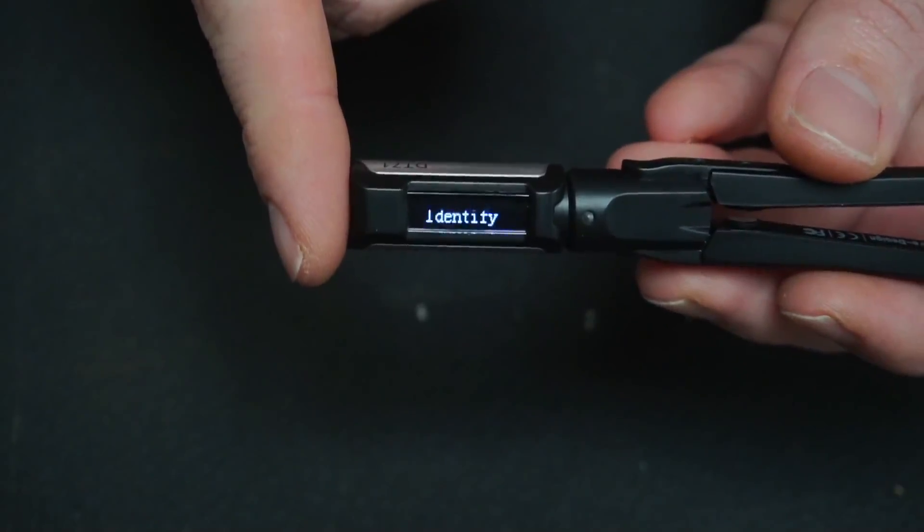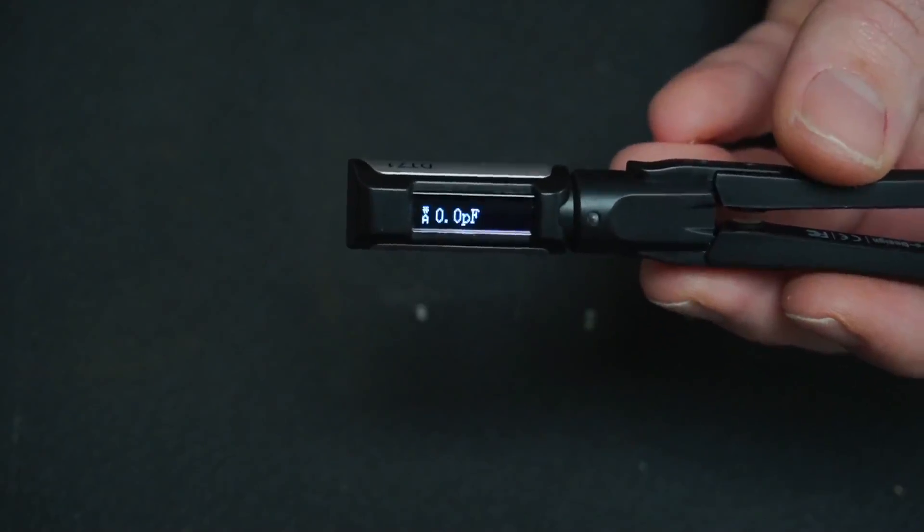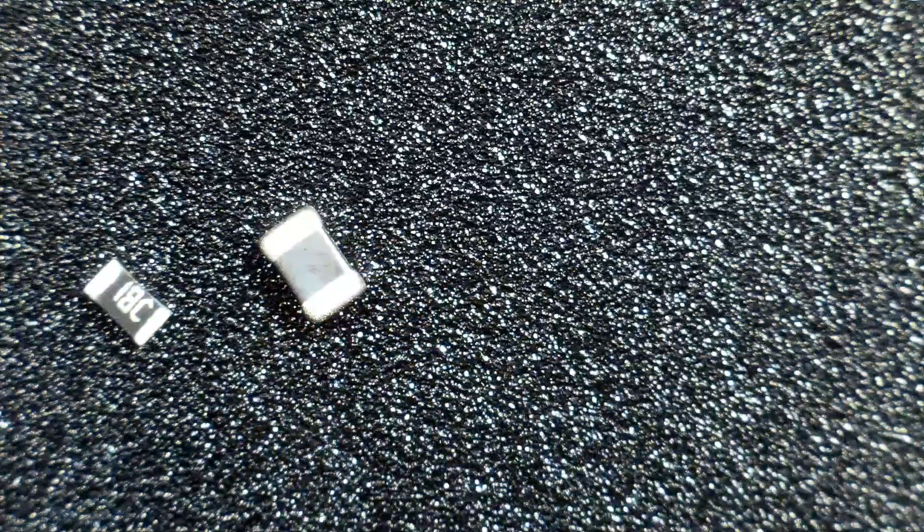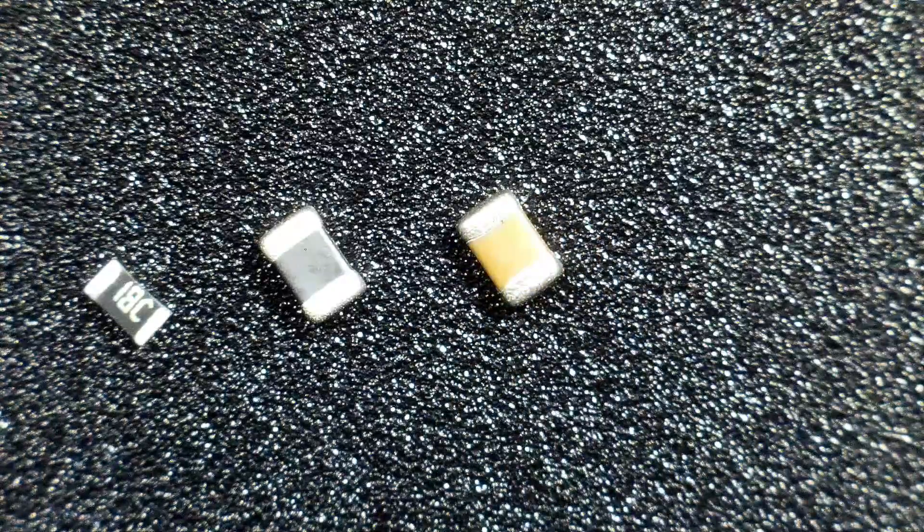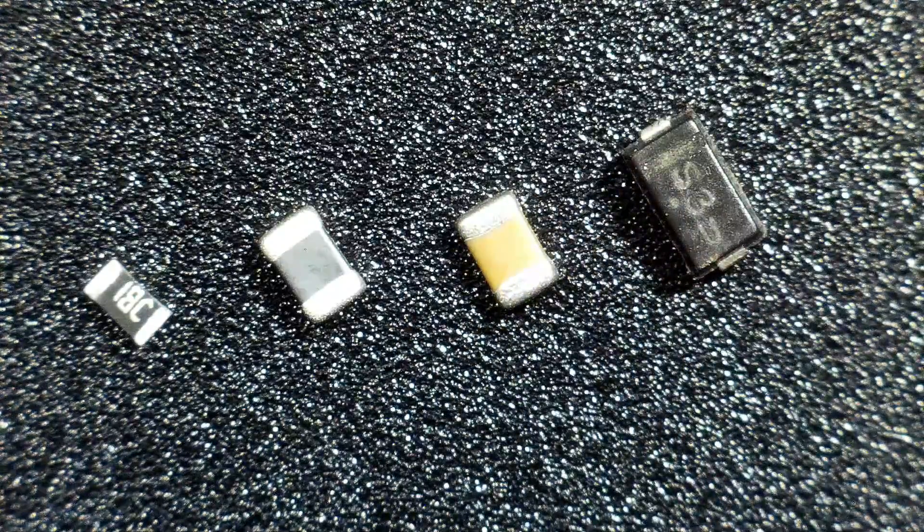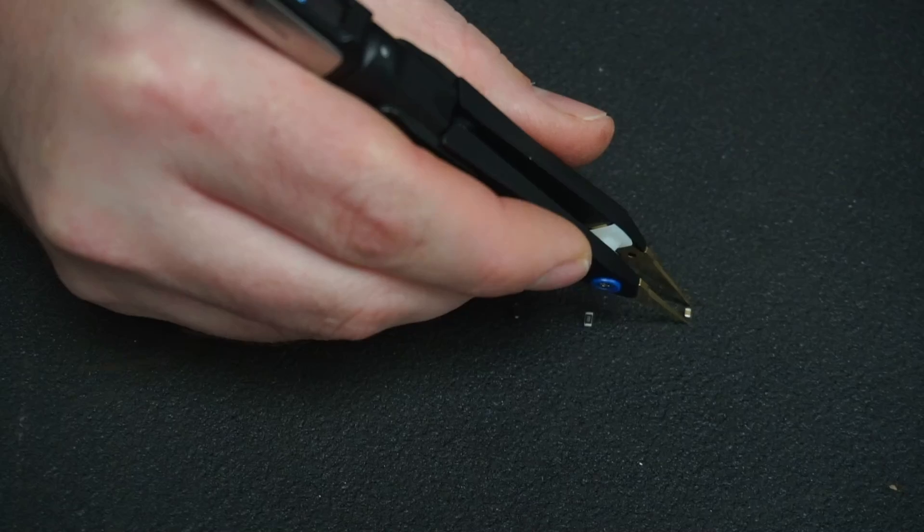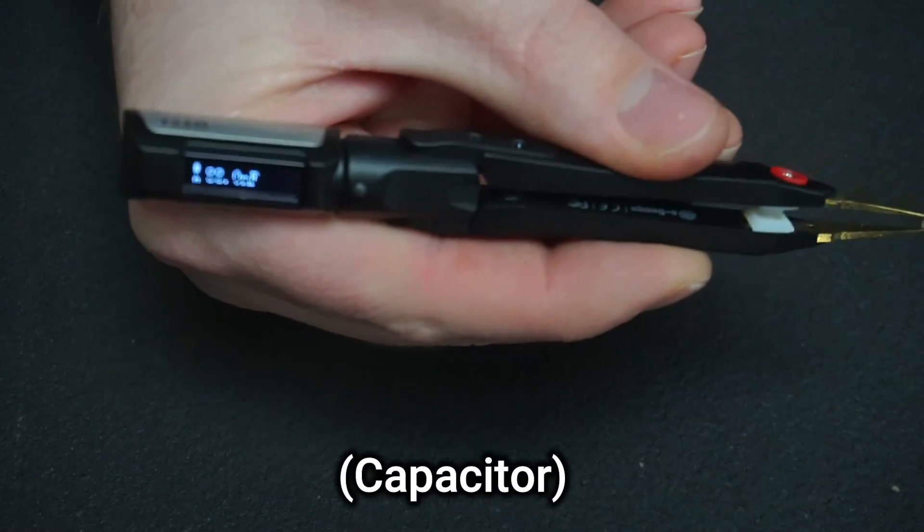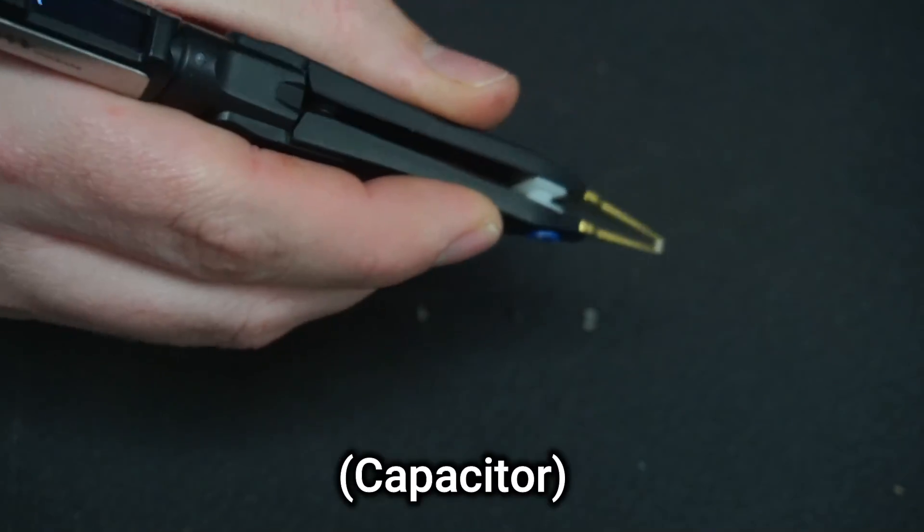Probably my favorite feature of the DT-71s is the component identification function. To test this function, I have four different components on the bench: a capacitor, resistor, diode, and lastly inductor. It quickly identifies each component and displays the value on the OLED display.